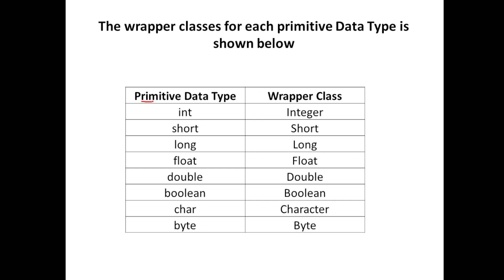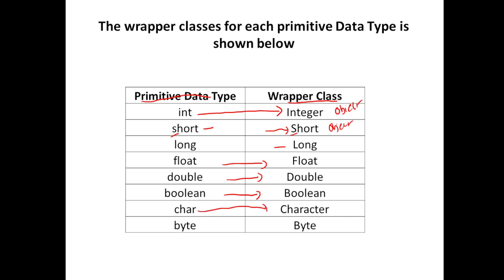When you have a primitive data type, what is the corresponding wrapper class? 'int' maps to 'Integer' (capital I), 'short' maps to 'Short' (capital S), 'long' maps to 'Long', 'boolean' to 'Boolean', 'char' to 'Character', 'byte' to 'Byte' (capital B). So 'int a = 2' is not an object, but 'Integer a = new Integer(2)' makes 'a' an object on which you can call all wrapper class methods.